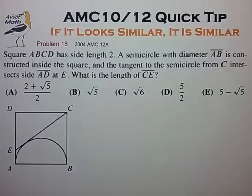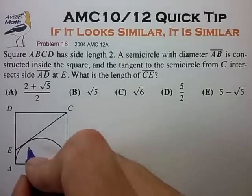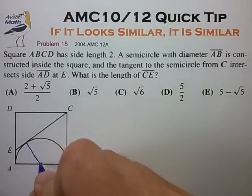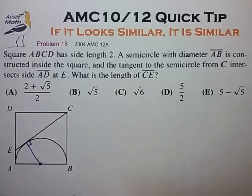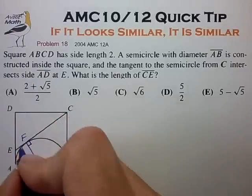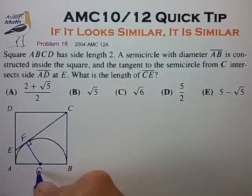It's not obvious how to proceed, so let's draw in some lines to help us and work around the figure. One line that's almost always helpful is to draw the radius to any tangent point. Let's call the tangent point F and the center of our semicircle G.